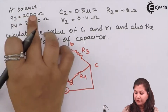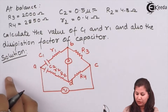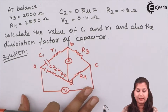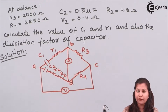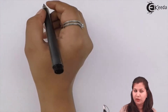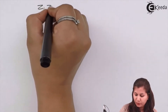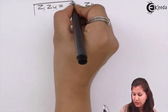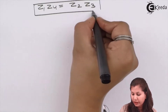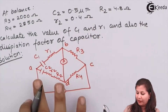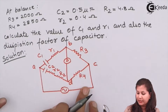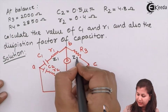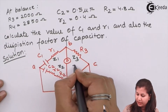Now we are given the values of the variables at the balance condition of the bridge. The general balance equation for an AC bridge is Z1·Z4 = Z2·Z3. Using this equation with all known impedances, we can find the unknown impedance Z1. So Z1 is arm AB, Z2 is arm AD, Z3 is arm BC, and Z4 is arm CD.